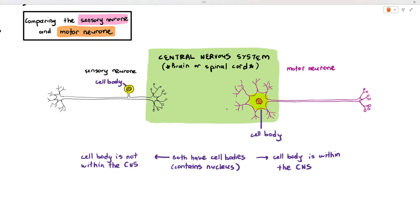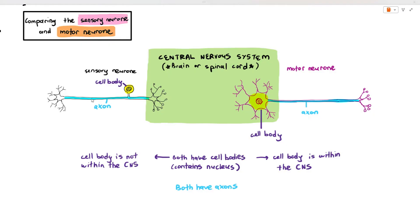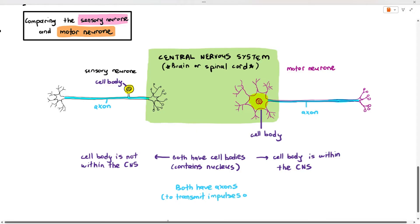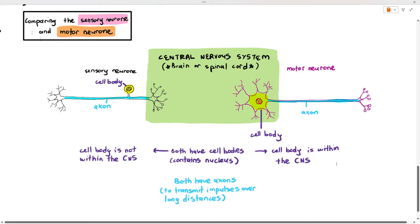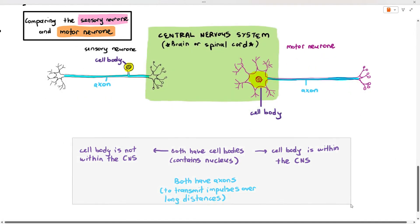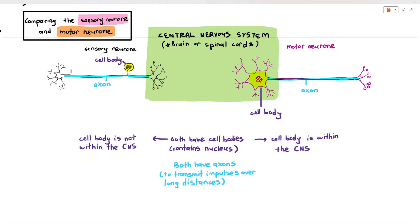They have some similarities but also differences. The second part is the elongated structure I'm highlighting in blue, referred to as axons. Axons are just these long structures. Even though these are individual cells, some axons can be up to a meter long, because axons have to transmit impulses over long distances. Both the sensory and motor neuron have axons — that is a similarity.